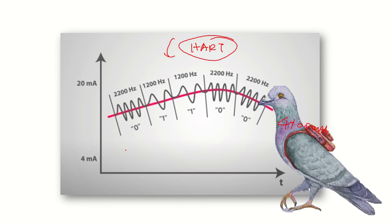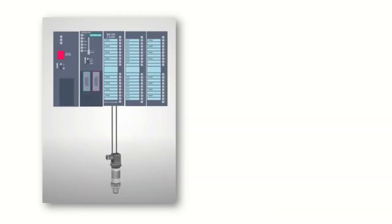As an analogy, consider a pigeon that normally flies from one place to another — that is like your analog communication. In the old days, people used pigeons to transfer information by tying a message to the pigeon's leg or back. So along with the travel, it also carries additional information. HART protocol is like that pigeon: along with the original transmission it also carries additional digital information.